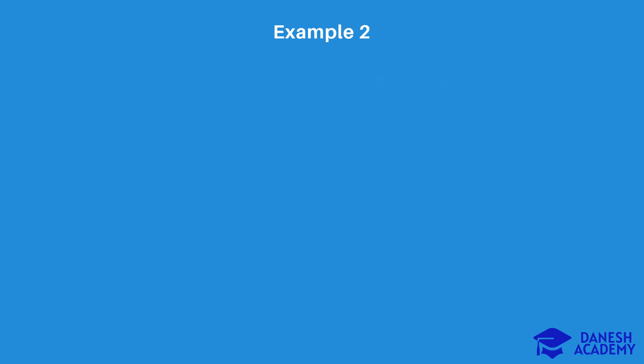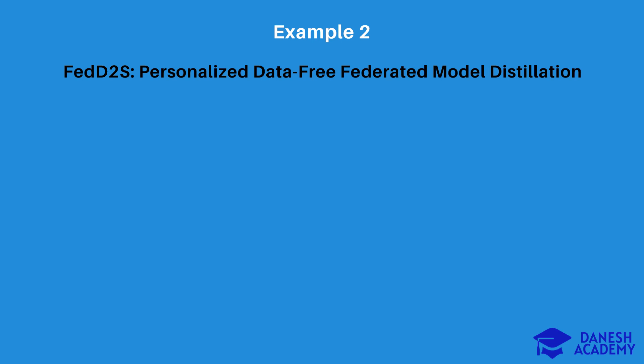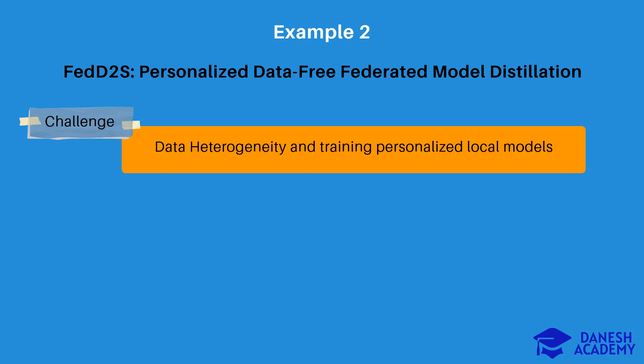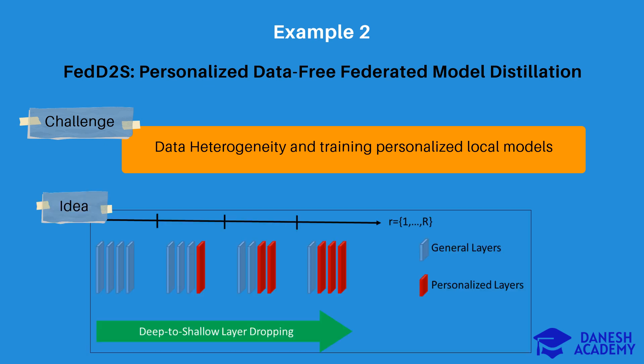The next work is FedD2S — Personalized Data-Free Federated Model Distillation. The main challenge is to train personalized local models for clients with heterogeneous data in a federated framework. To do so, we utilize a property of CNN model training: as the training process progresses, deep layers or last layers of the model become more adapted to the local datasets. In other words, the personalization degree of deeper layers increases as training continues. So, to obtain personalized local models and prevent sharing adverse knowledge among clients, we share only the knowledge of general layers, while the knowledge of personalized layers is kept local.